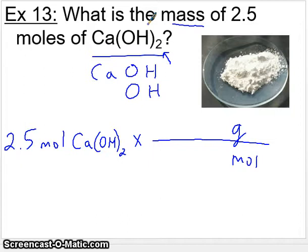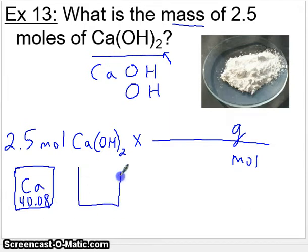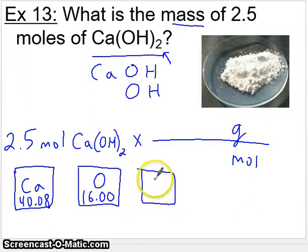Now the mass we'll take again from the periodic table. In this case, we will have to add up calcium and oxygen and hydrogen. So if you take a look at the periodic table for calcium, you should see 40.08 if I'm not mistaken. 40.08. If you take a look at the periodic table for oxygen, you should see 16.00 and for hydrogen, you should see 1.01.